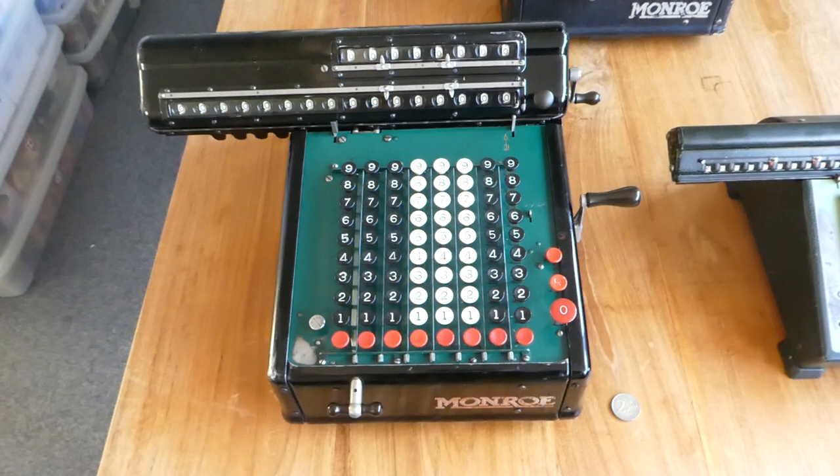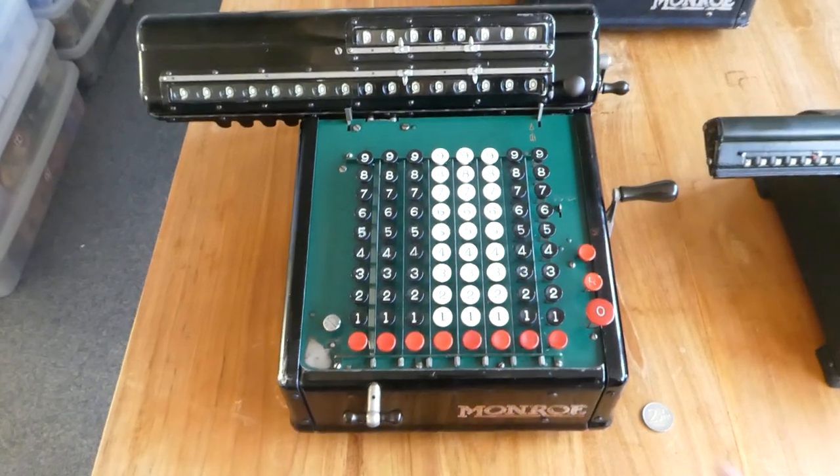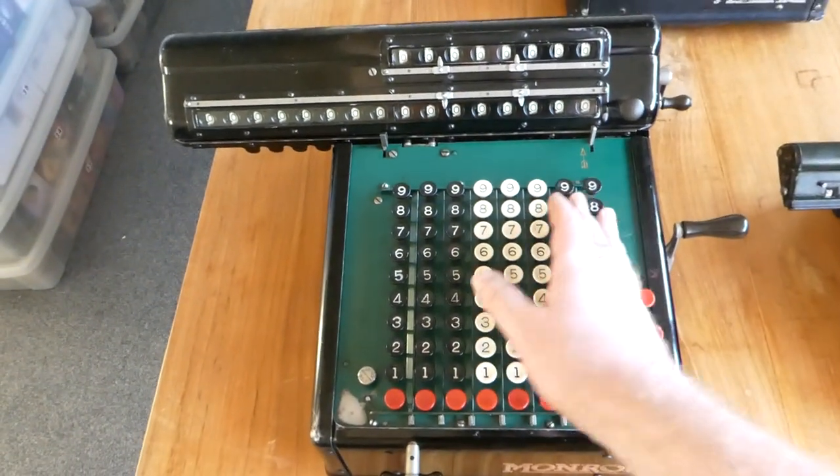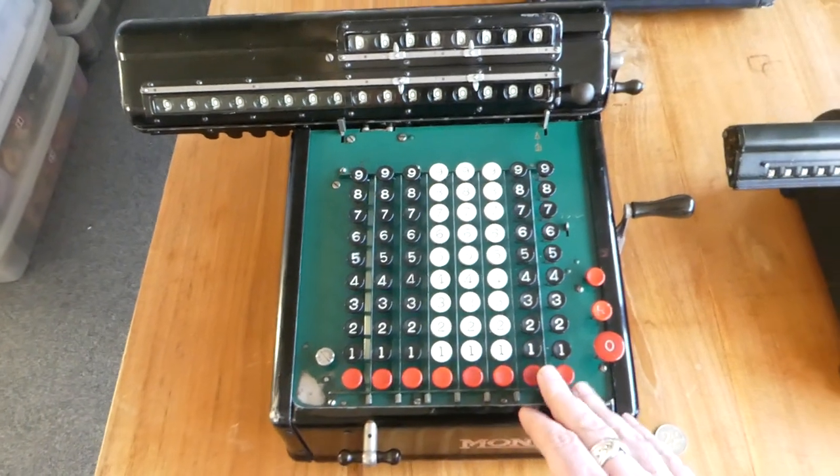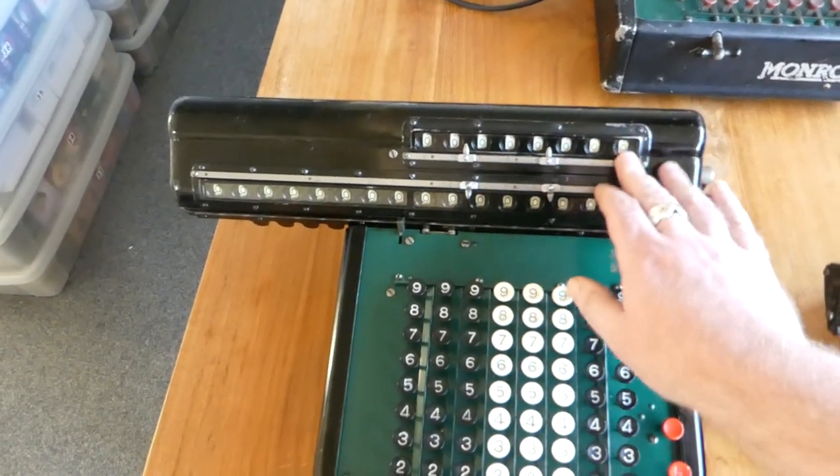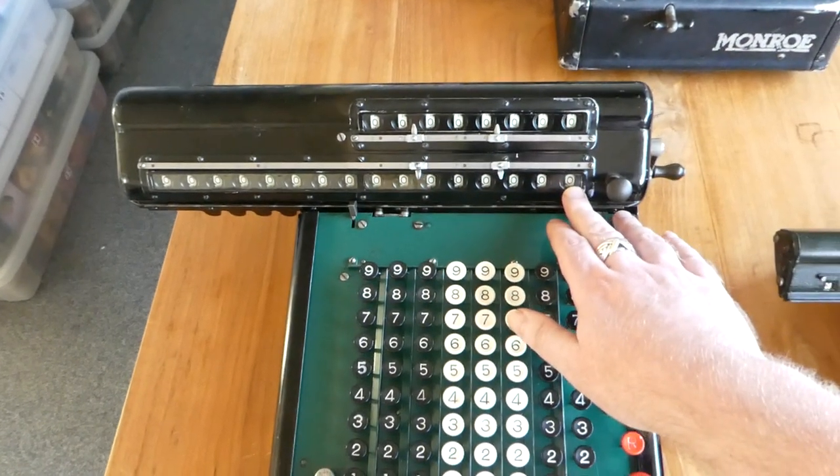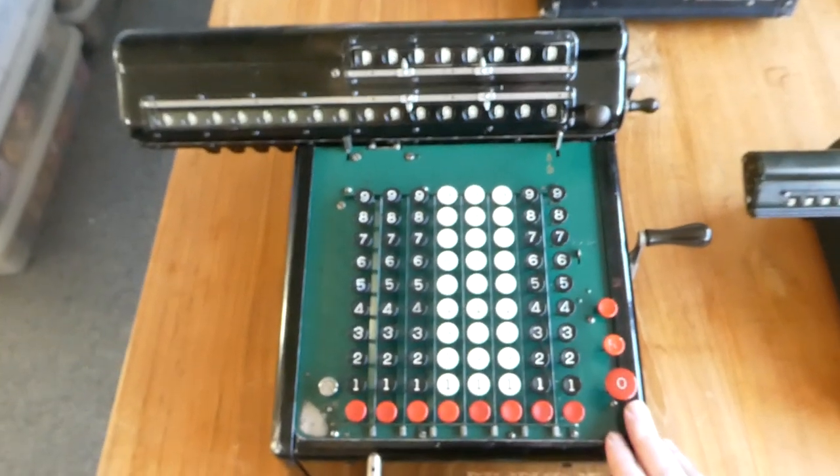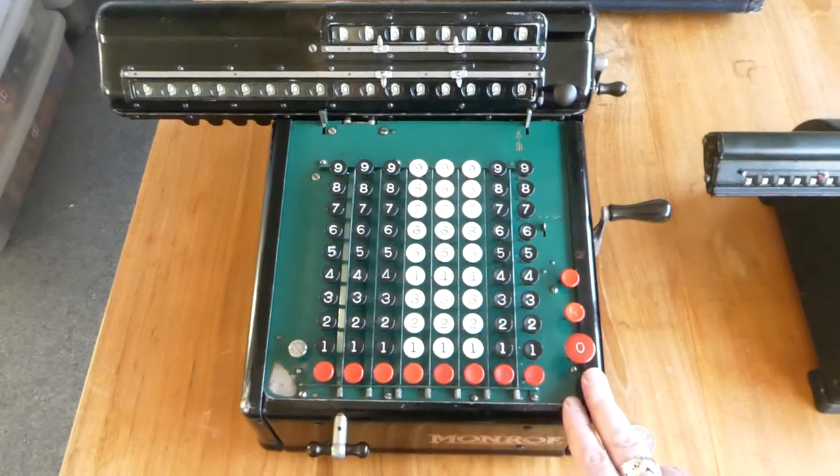It's a very easy machine to use. It has a full keyboard with eight columns, a carriage with a counter of eight digits, and a register with 16 digits. And let me show you how to use it.